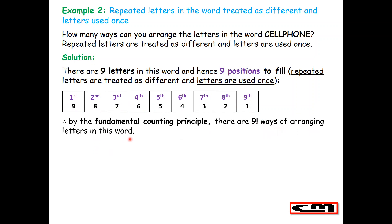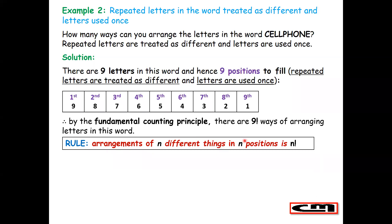By the fundamental counting principle there are nine factorial ways of arranging the letters in this word. This is how the rule is arrived at and applied. As long as you have nine different letters being arranged in nine different positions, it is nine factorial — that is, n different things in n positions gives n factorial.